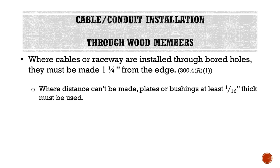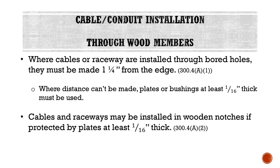In residential construction, this is typically when we use nail plates. You can also use bushings that pop into the hole, adding another layer of protection. The whole idea is to prevent someone from driving a screw or nail through the sheetrock and into the cable. Cables and raceways may also be installed in wooden notches if protected by plates at least one-sixteenth inch thick. Instead of boring a hole in the 2x4, you could notch one side to install the cable or raceway in, but you would still need to use a nail plate or similar protection.